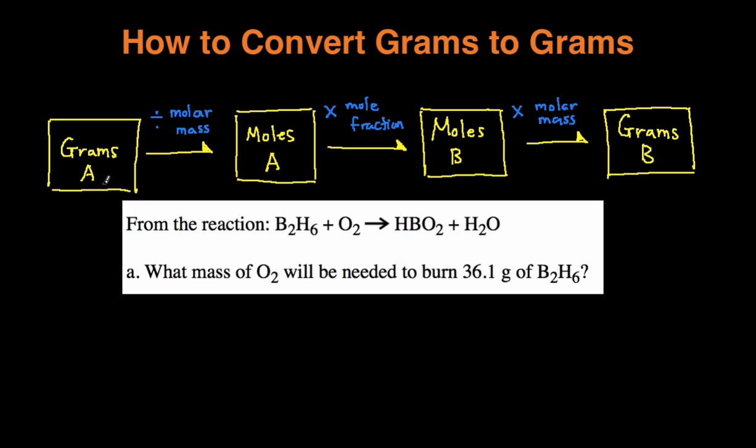And it really just comes down to following this flowchart. This flowchart tells you exactly what you need to do. For the purpose of this explanation, A is going to be what we're given, and then B is going to be what we're trying to figure out. And this will make more sense as we look at this example.